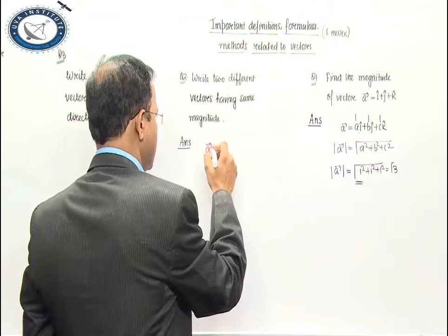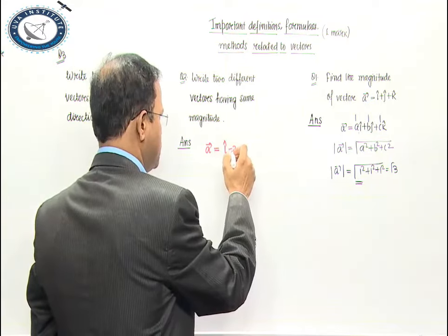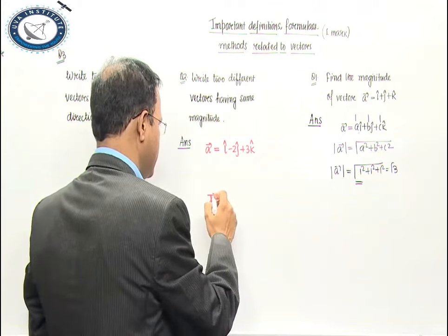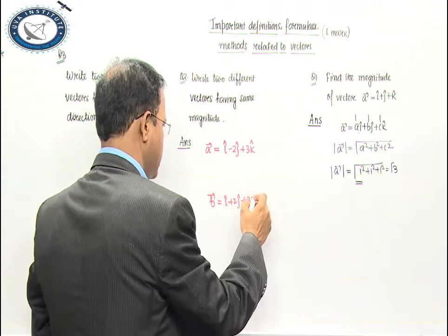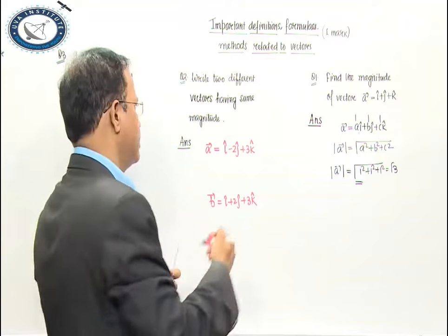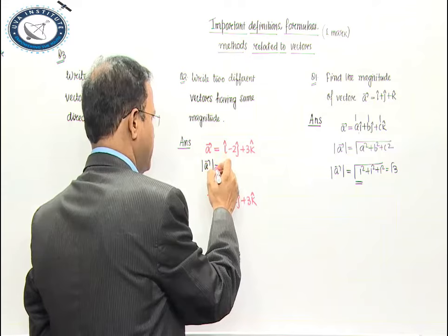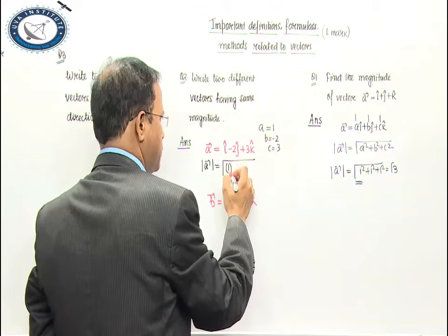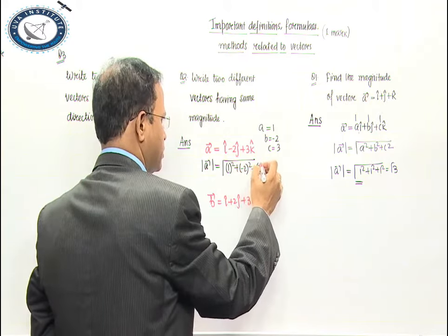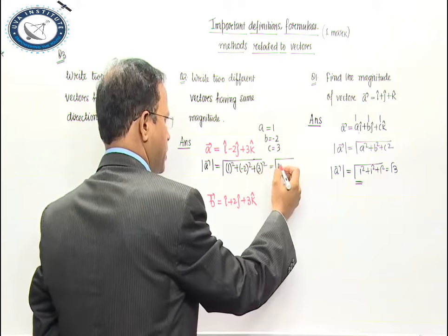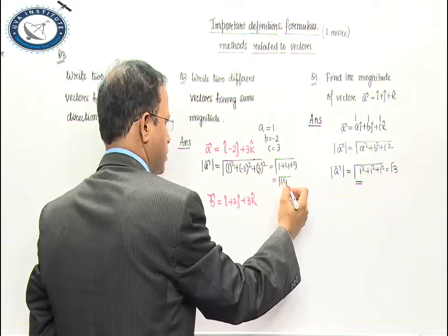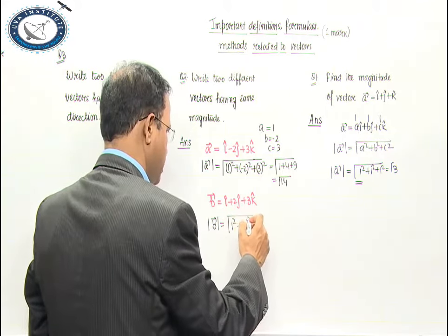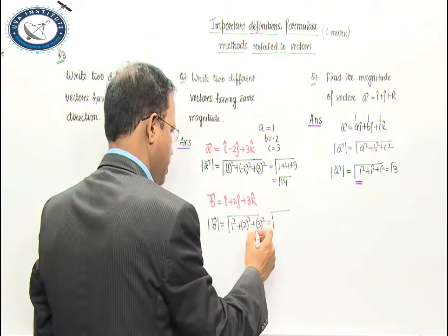Let me write two different vectors. Vector a is i minus 2j plus 3k, and vector b is i plus 2j plus 3k. The magnitude of a: a is 1, b is minus 2, c is 3, so it is root of (1 squared plus minus 2 squared plus 3 squared). For vector b, the magnitude is root of (1 squared plus 2 squared plus 3 squared), which is also root of 14. Both come out to root 14.